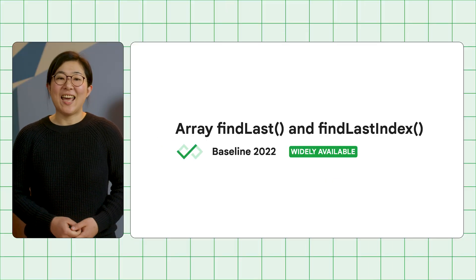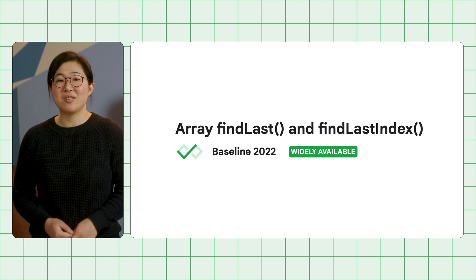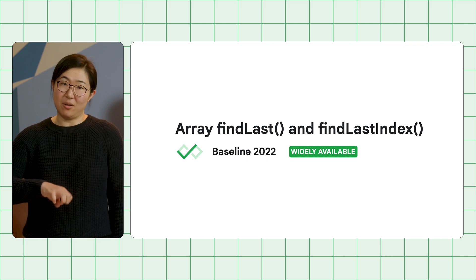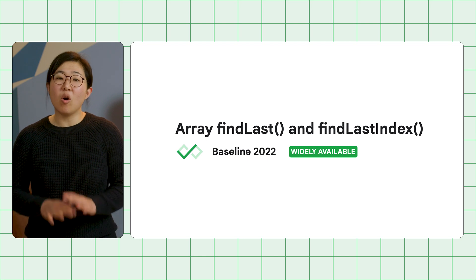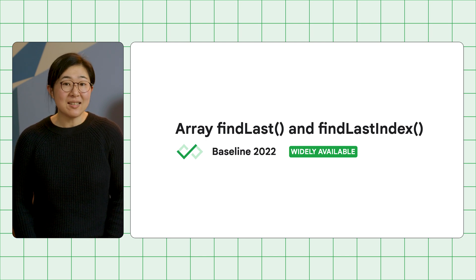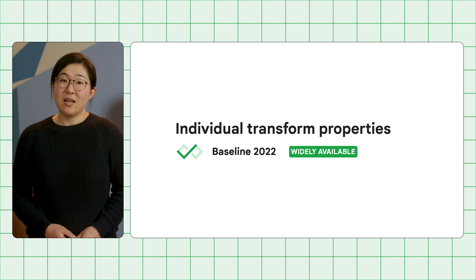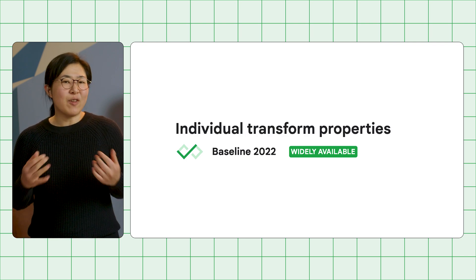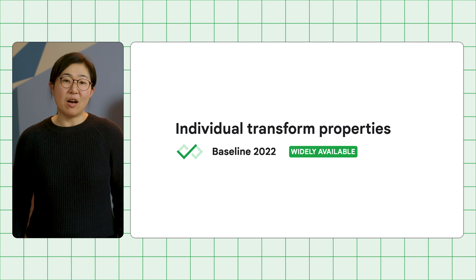Array.findLast and findLastIndex are very convenient methods to get items from the end of an array. This feature has been supported by all major browsers for 30 months, which means it is now baseline widely available. Individual transform properties, which give you finer-grained control over CSS transforms, are now baseline widely available as well.